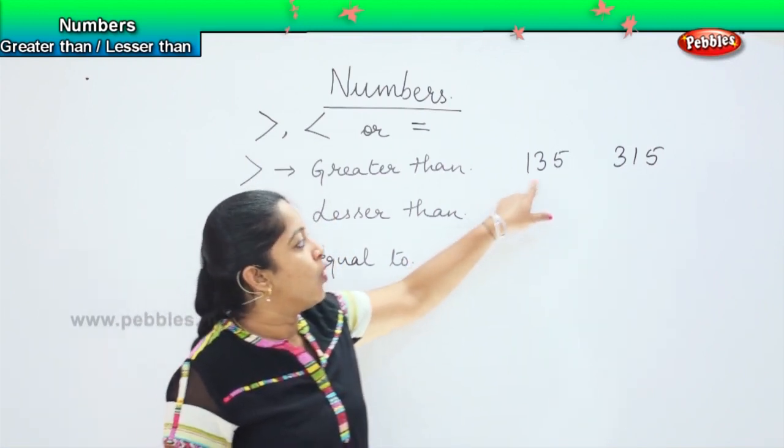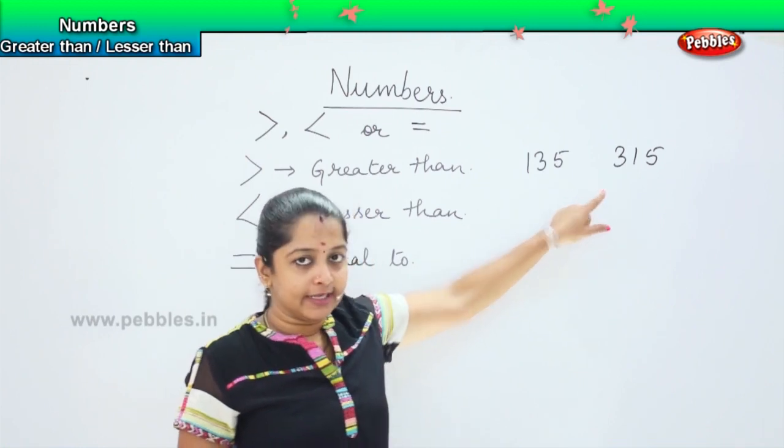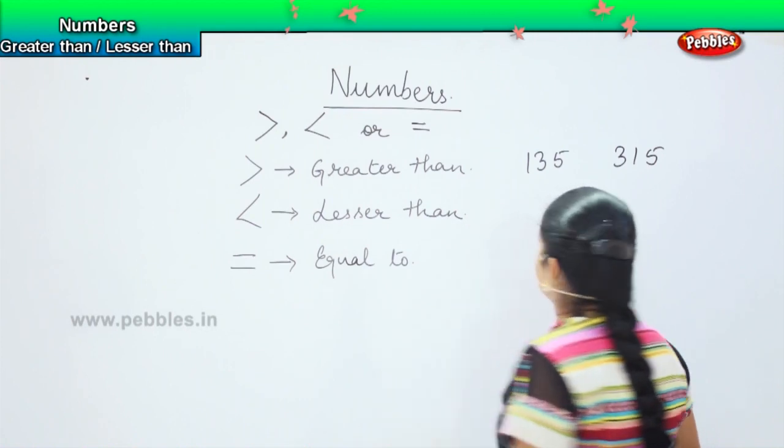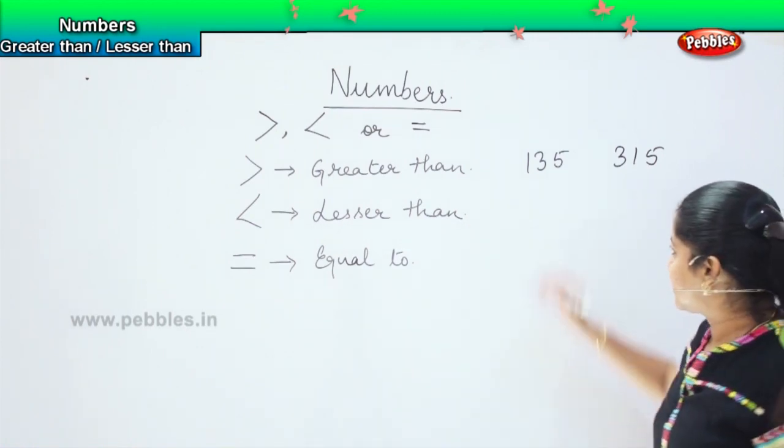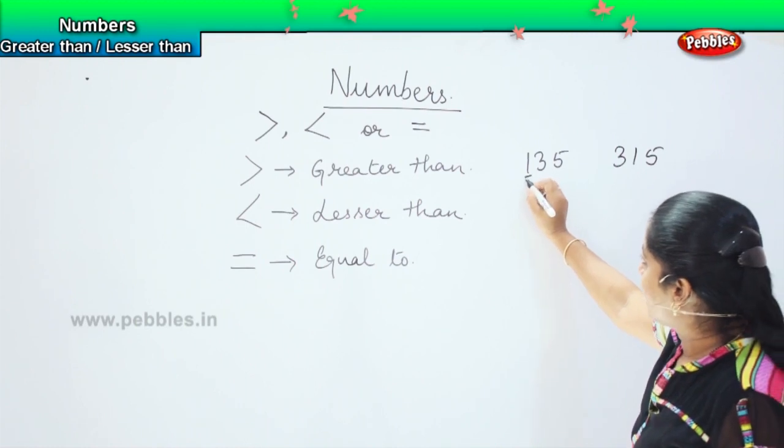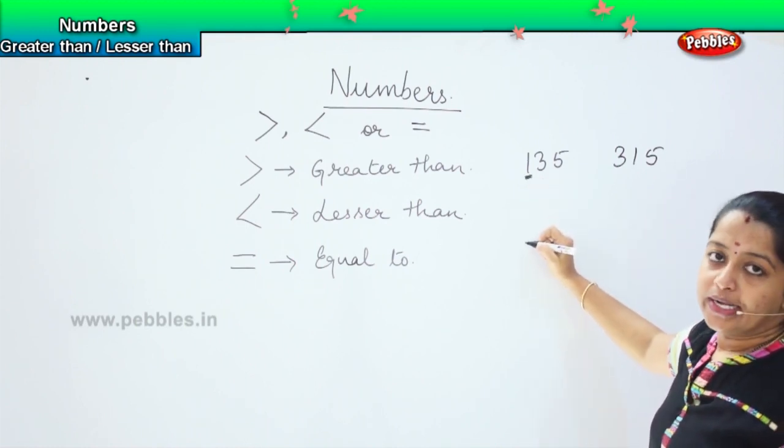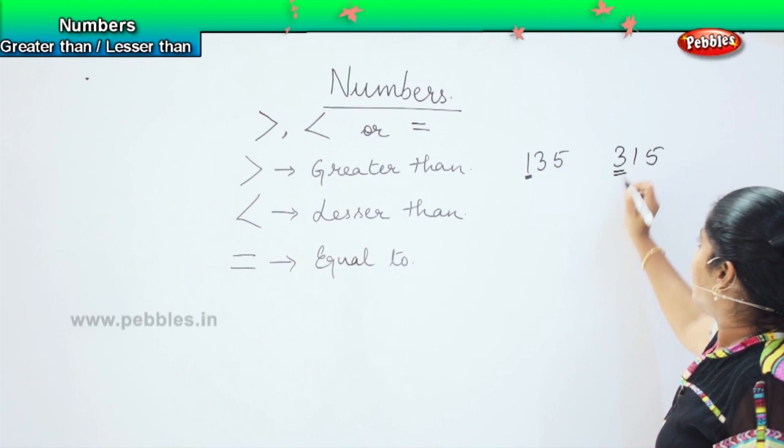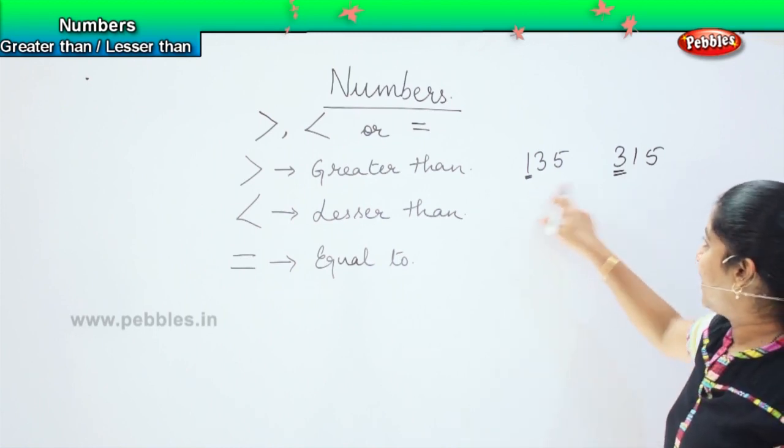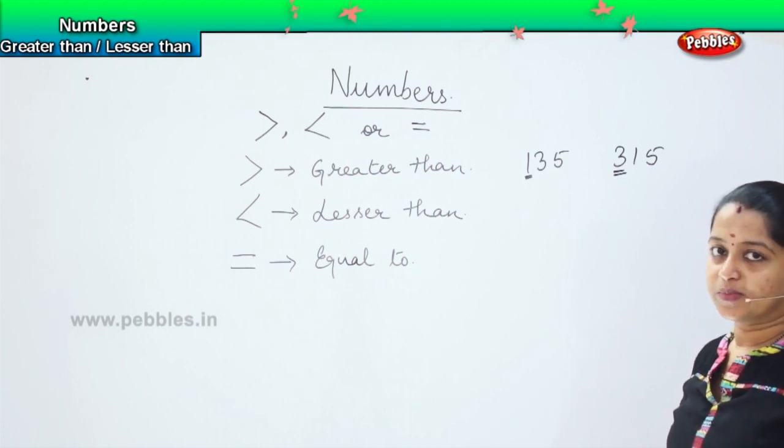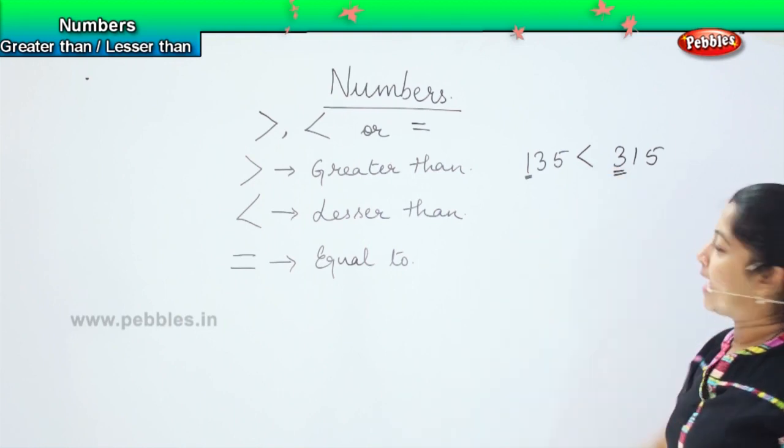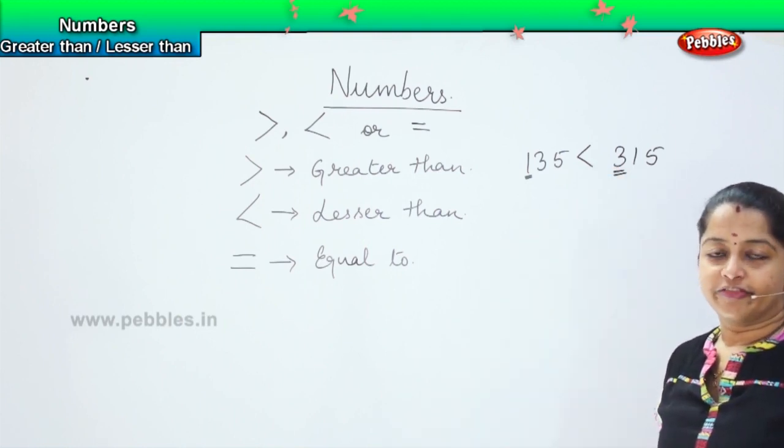Yes. Whenever we have to find this, we need to find the place value of the numbers. First we will start from the left hand side. The hundreds position says 1 here, whereas in this, the hundreds position says 3. Is 1 bigger or 3? Naturally, 3 is bigger, right? So, 135 is lesser than 315.